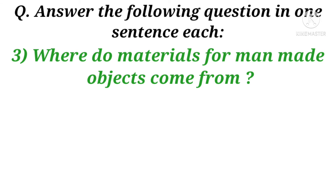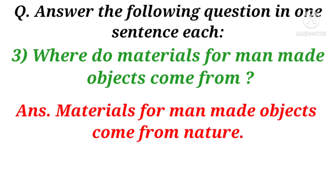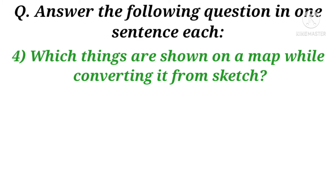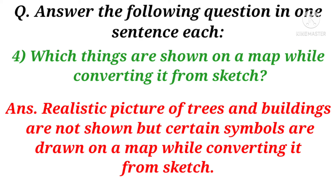Question 3: Where do materials for a man-made object come from? Answer: Materials for man-made objects come from nature. Question 4: Which things are shown on a map while converting it from a sketch? Answer: Realistic pictures of trees and buildings are not shown, but certain symbols are drawn on a map while converting it from a sketch.